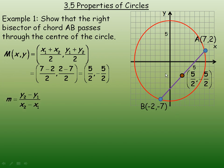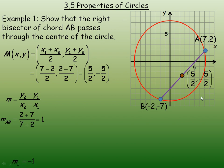Now in order to find the equation of the line that perpendicularly bisects AB, we need to know the slope of AB. So 2 minus negative 7 gives 2 plus 7 in the numerator, and 7 minus negative 2 gives 7 plus 2 in the denominator, which equals 1. So AB has a slope of 1, which means that the perpendicular bisector has a slope that is the negative reciprocal of 1, or negative 1.